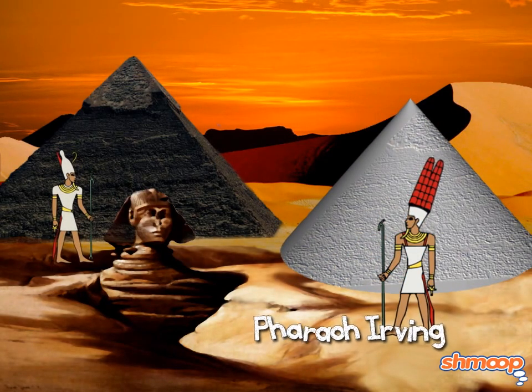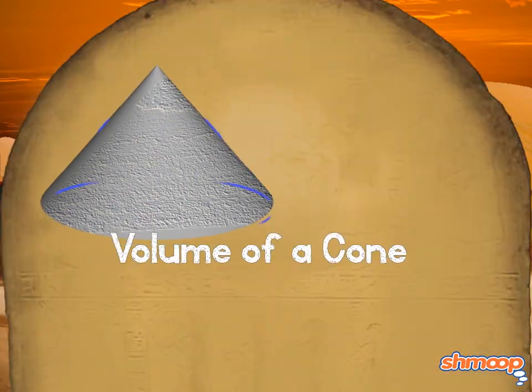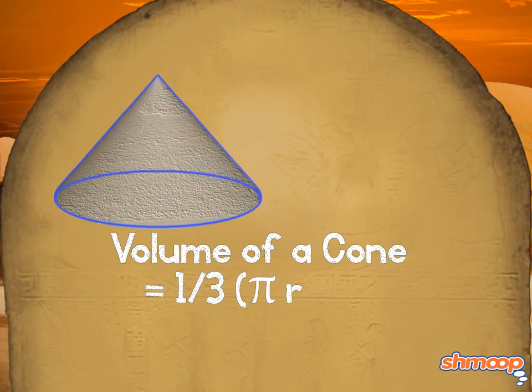His neighbor, Pharaoh Irving, is going to meet his maker in a cone rather than a pyramid. So he'll have to use the formula one-third pi times radius squared times height to find the volume of the cone.